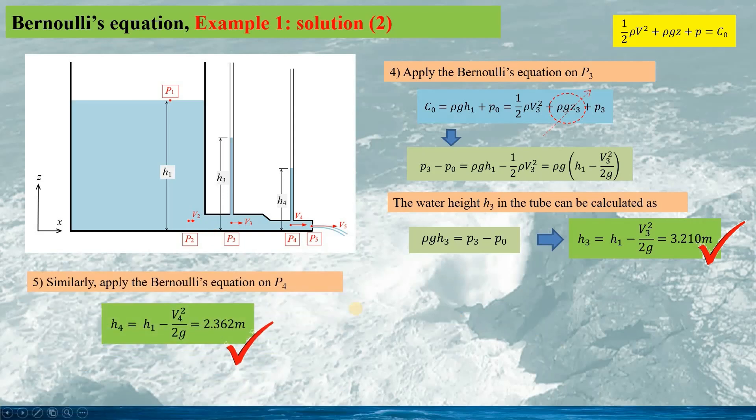Similarly, we can apply the Bernoulli's equation on P4, and the water height in the vertical tube h4 is given as this. We obtain the value of h4, 2.362m. This is significantly lower than the water height in the tank, H1 equaling 4m.